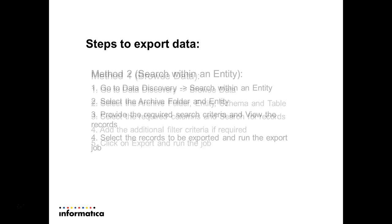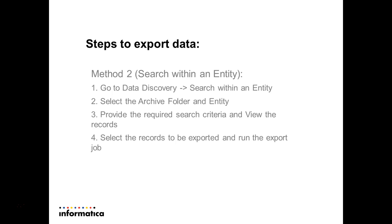Now I will explain the second method. The second method is exporting the data using the Search Within an Entity feature of Data Discovery. The steps are as follows: go to the Search Within an Entity option from the Data Discovery menu, select the Archive Folder and Entity details, provide the required search criteria and view the records. You can select some or all of the displayed records and then run the export job.